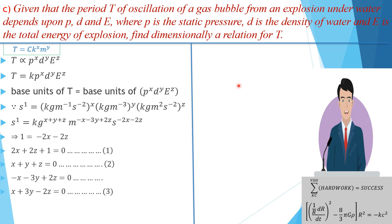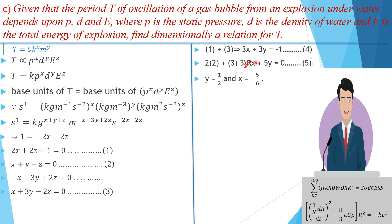We now solve this system of three equations. Adding equation 1 and equation 3, then taking two times equation 2 and adding equation 3, we obtain two simplified equations — equation 4 and equation 5. Solving equations 4 and 5 simultaneously gives the values of x and y, and substituting back into equation 2 gives z. Putting these values of x, y, and z back into our original relation T = k · p^x · d^y · E^z gives us the dimensional expression for the period T. That is the required relationship.